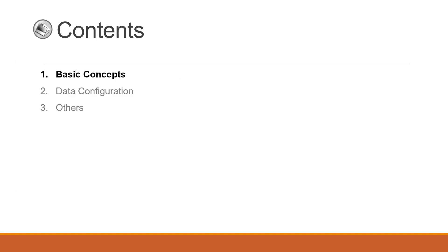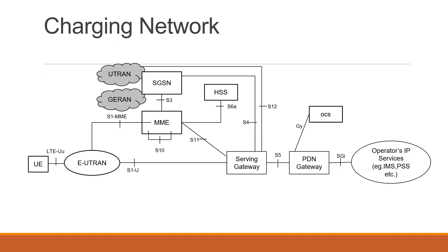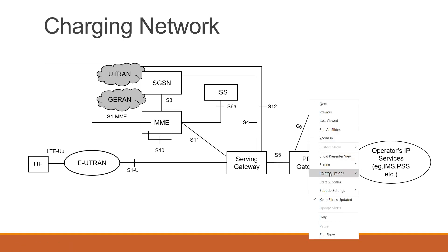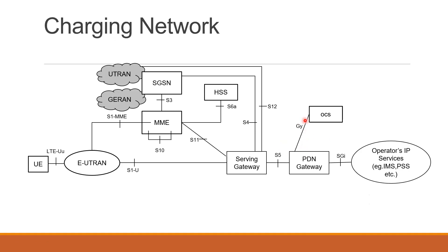First we are going to look into the basic concepts — basically a revision. Here you can see this is the Gz interface. Your PDN gateway, the P-Gateway, basically the PDN packet data network gateway, connects to your OCS via the Gz interface. In the architecture, this is where OCS is located, and this is the interface that we are going to look into.